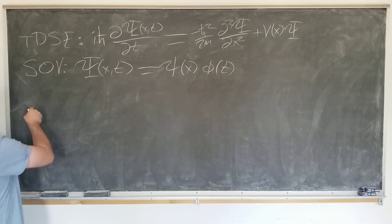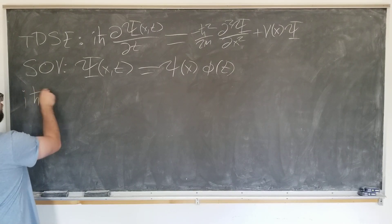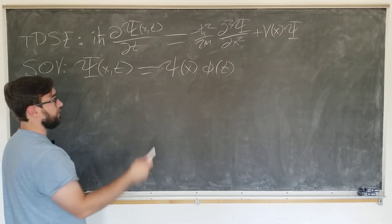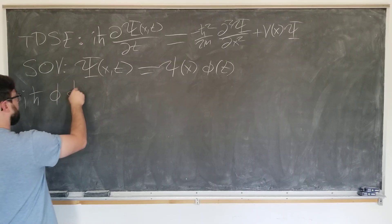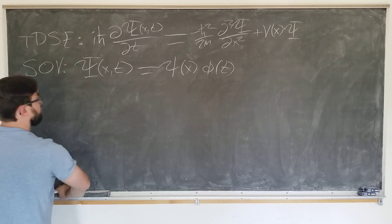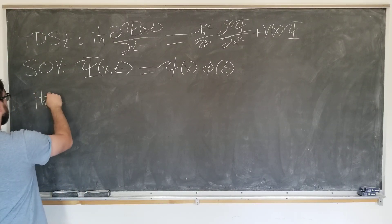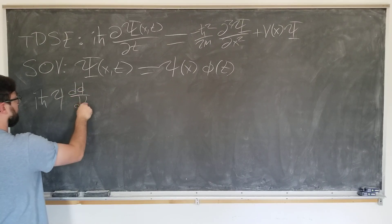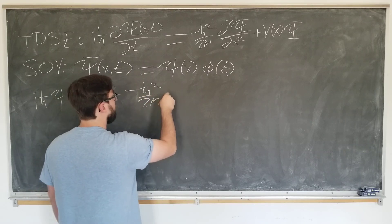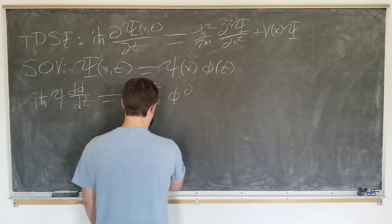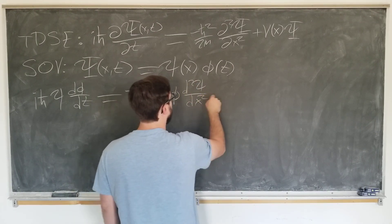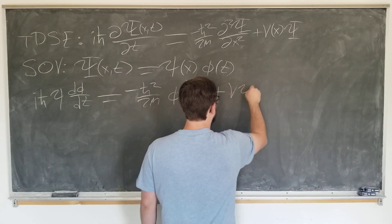So on the left side we have i h-bar, and phi comes out to only act on psi. We have i h-bar psi times d-phi/dt equal to the right-hand side: minus h-bar squared over 2m, where phi comes out — this is a total derivative now — times d-squared psi by dx-squared plus V psi phi.